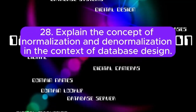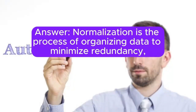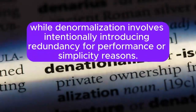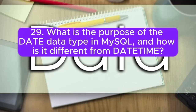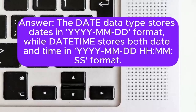Question 28: Explain the concept of normalization and denormalization in the context of database design. Answer: Normalization is the process of organizing data to minimize redundancy, while denormalization involves intentionally introducing redundancy for performance or simplicity reasons. Question 29: What is the purpose of the DATE data type in MySQL, and how is it different from DATETIME? Answer: The DATE data type stores dates in YYYY-MM-DD format, while DATETIME stores both date and time in YYYY-MM-DD HH:MM:SS format.